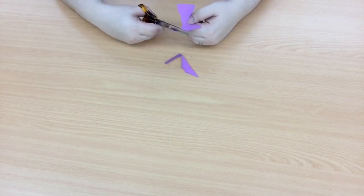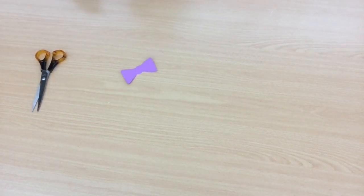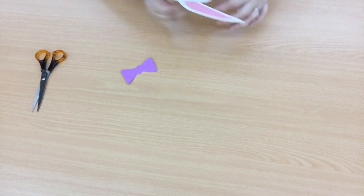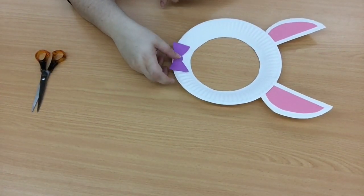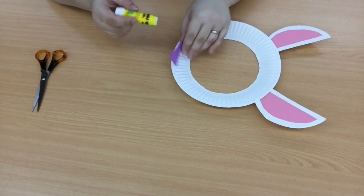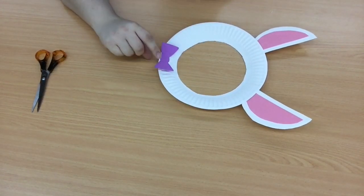Remembering to be careful with scissors. That bow tie looks good enough for a bunny, don't you think? Let's get our glue stick and stick it on. Give it a nice squeeze to make sure it sticks.